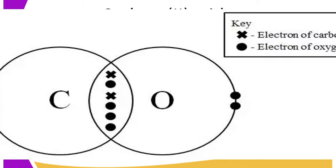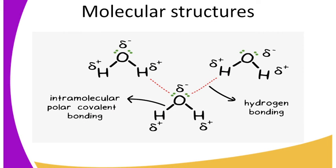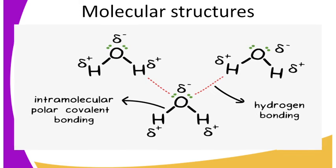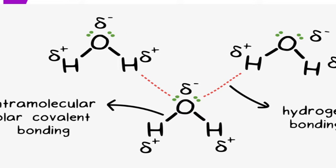Substances which have covalent bonds have either molecular or giant atomic structure. Most substances with molecular structure are gases or liquids at room temperature. Some substances like sulfur, sugar, iodine, paraffin, and naphthalene. The atoms forming the molecules are held together by strong covalent bonds.